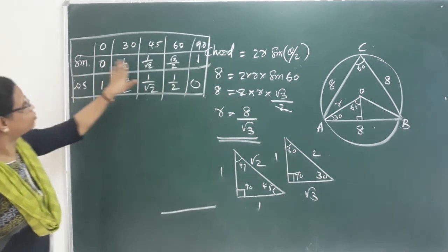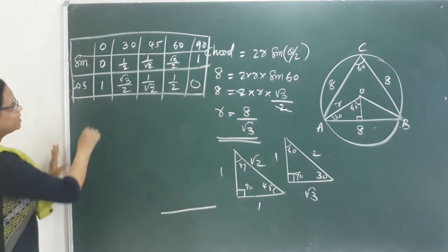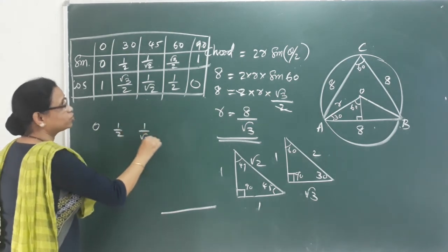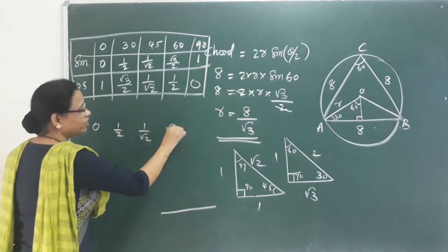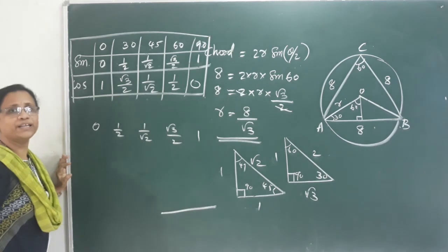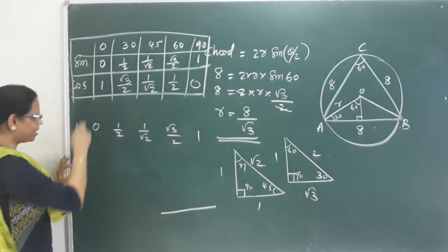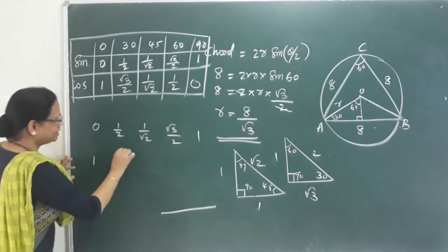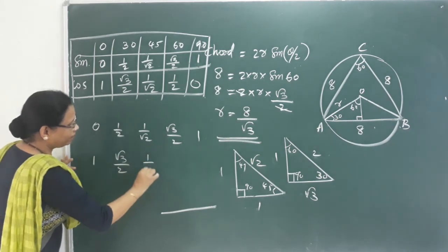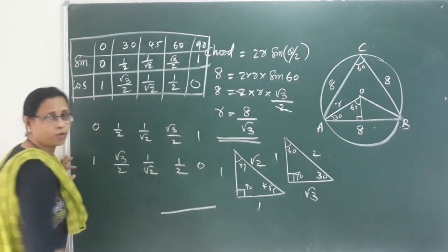The cosine values are: cos 0 equals 1, cos 30 equals root 3 by 2, cos 45 equals 1 by root 2, cos 60 equals 1 by 2, cos 90 equals 0. Study this one set and you will solve all problems.